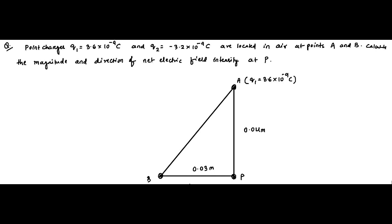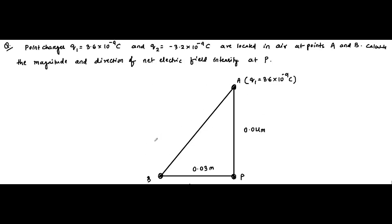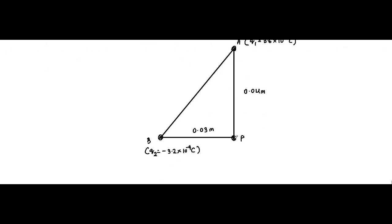Hello friends. So here we are with another question on electric field. The question is that point charges q1 equals 3.6×10⁻⁹ coulomb and q2 equals -3.2×10⁻⁹ coulomb are located in air at points A and B respectively. We have to calculate the magnitude and direction of the net electric field intensity at point P. So let us solve it.